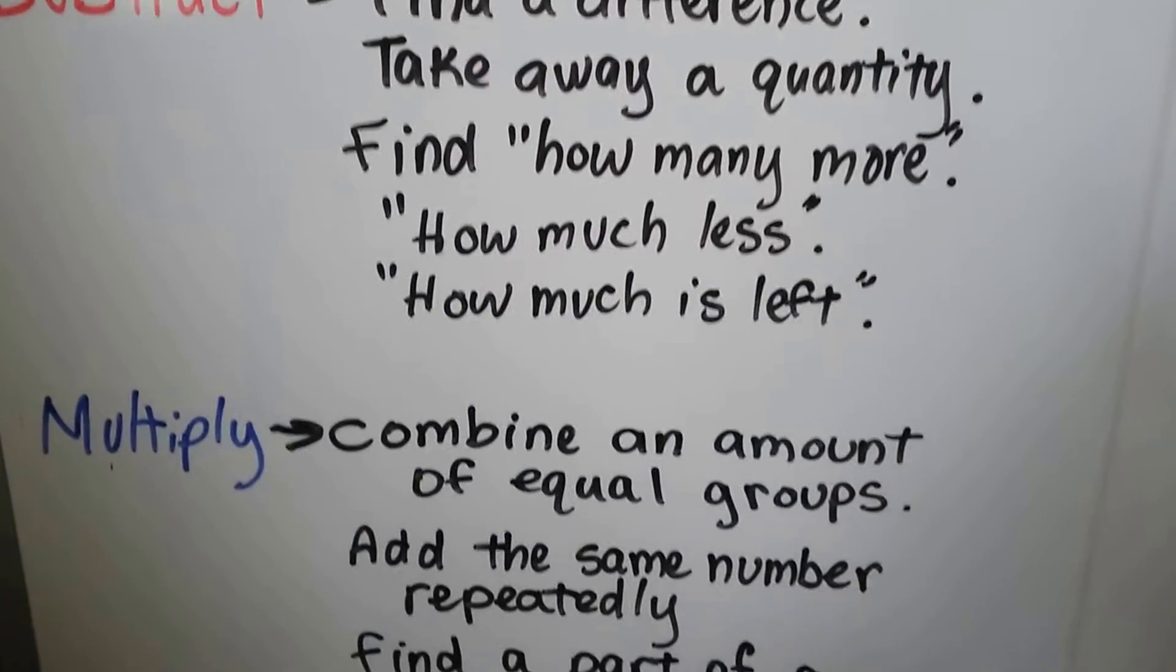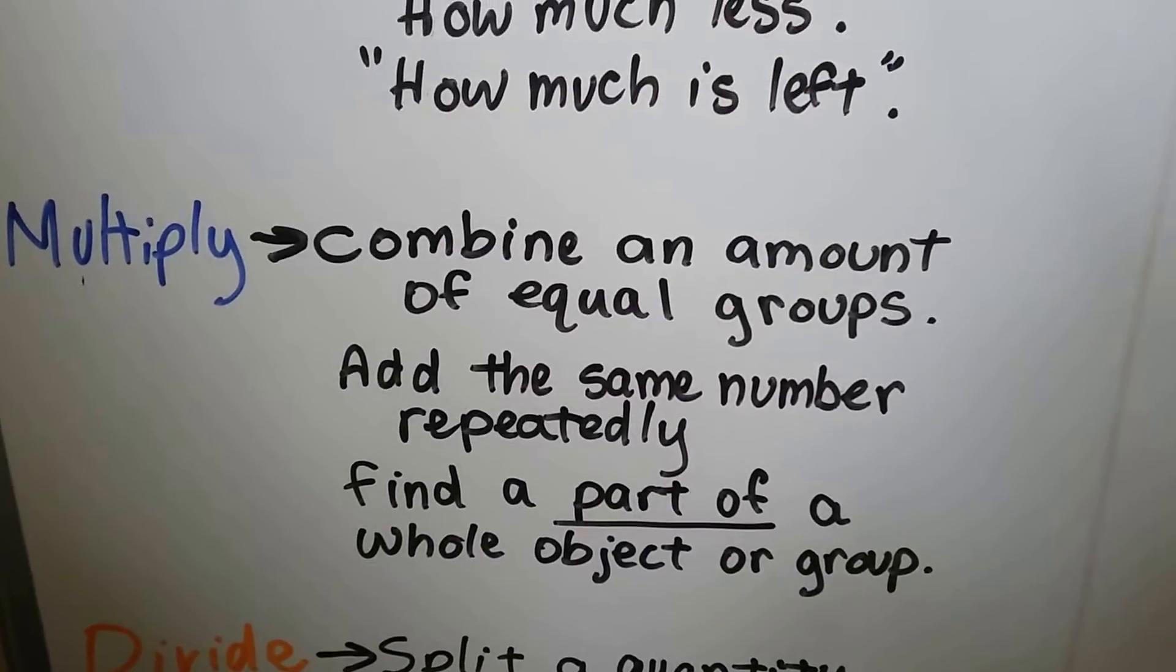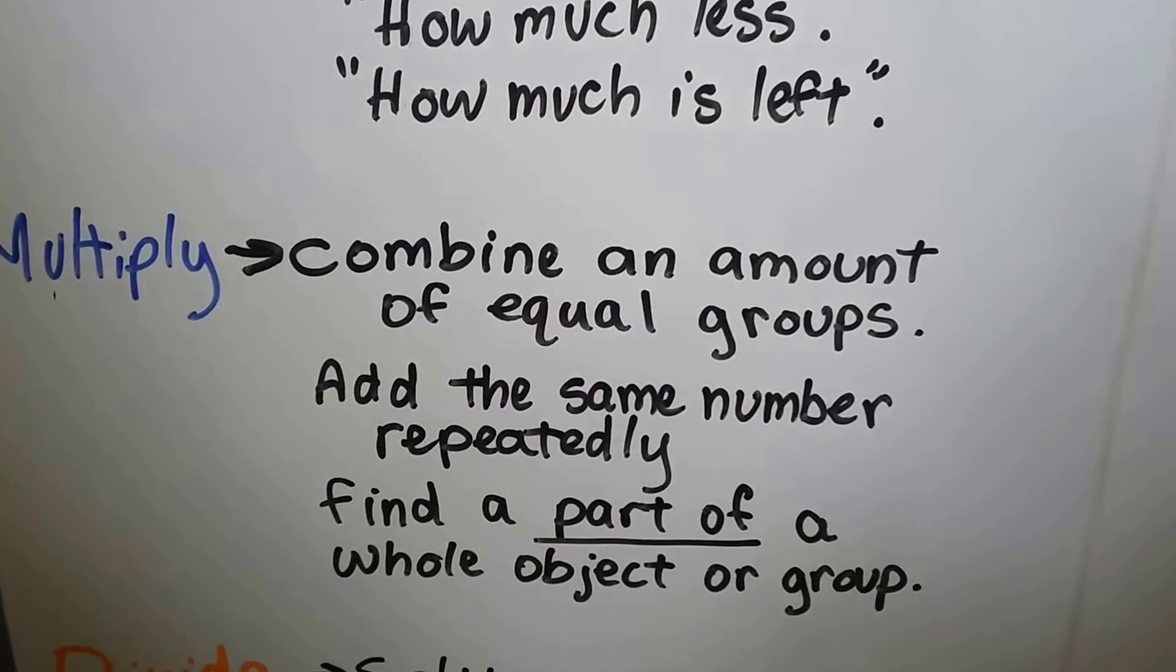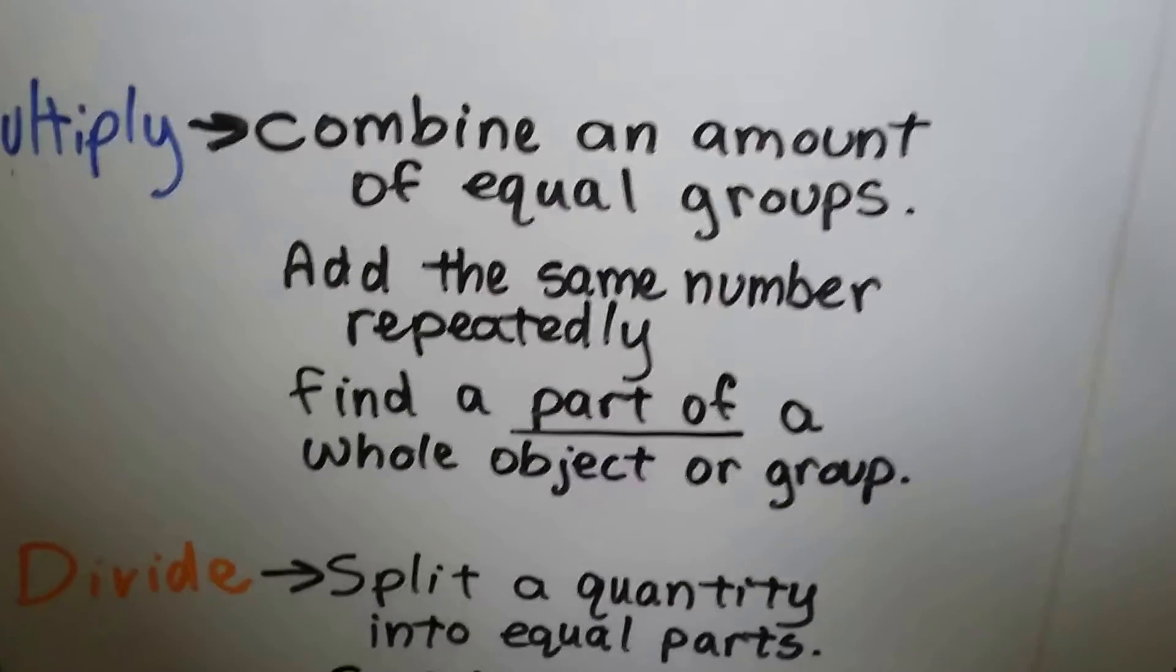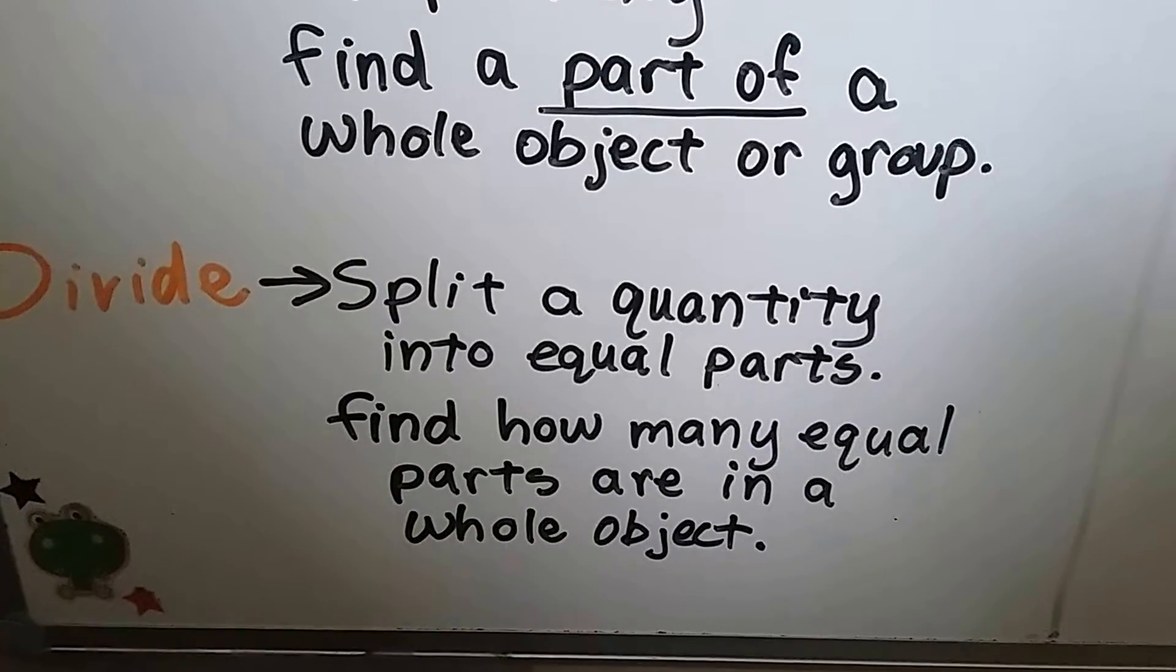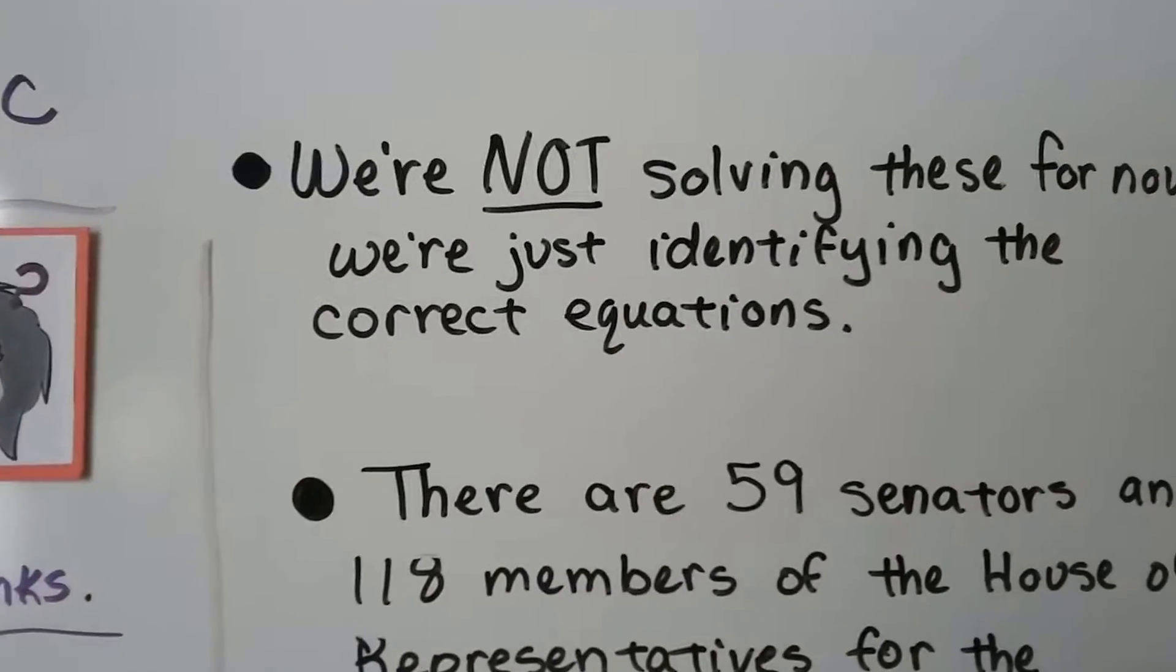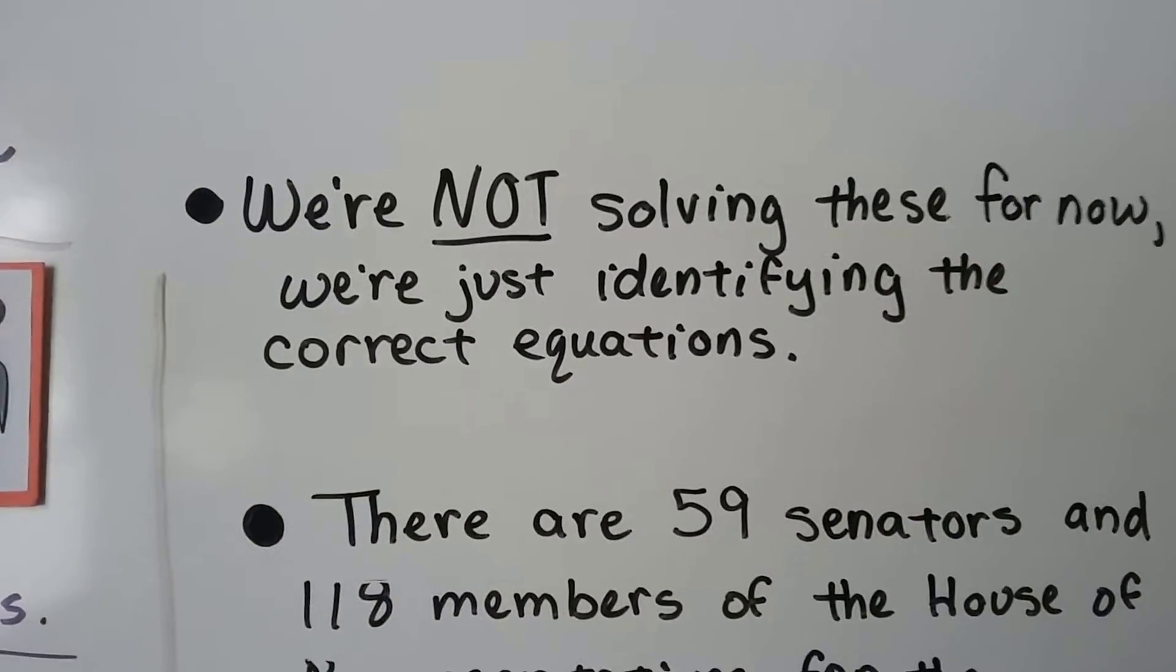And if we want to combine an amount of equal groups or add the same number repeatedly or find a part of a whole object or group we'd multiply. And if we wanted to split a quantity into equal parts or find how many equal parts are in a whole object we would divide. So just so you know we're not solving these for now, we're just identifying the correct equations.